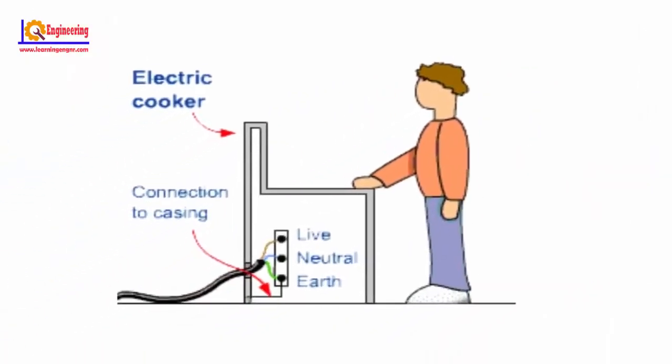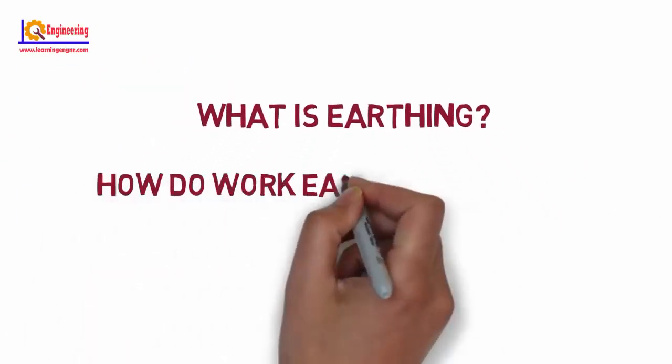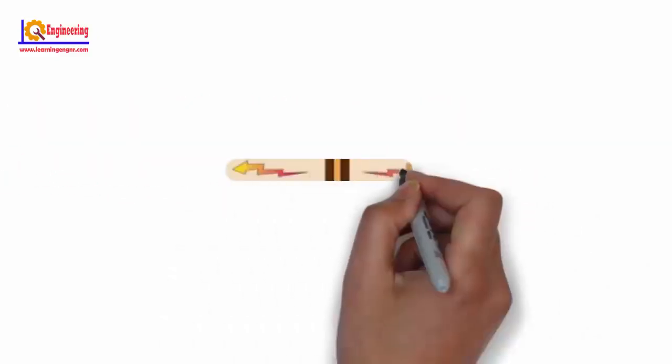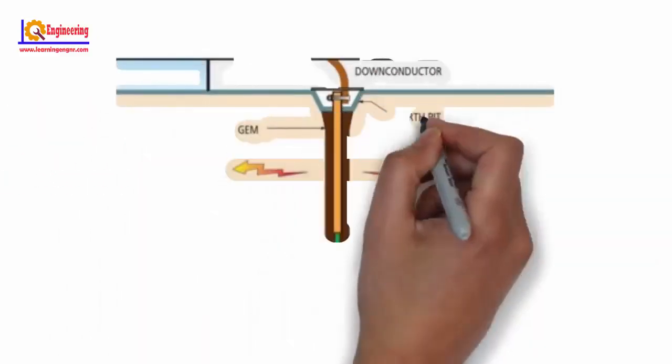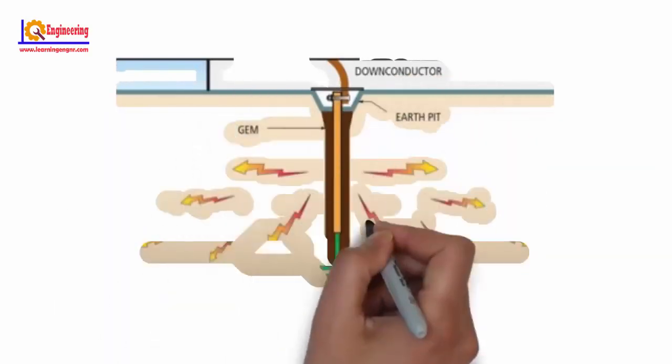We've already seen the importance of earthing, and now we'll see what is earthing and how the earthing system works. In electrical engineering, grounding or earthing is the reference point in an electrical circuit from which voltages are measured, a common return path for electric current, or a direct physical connection to the earth.